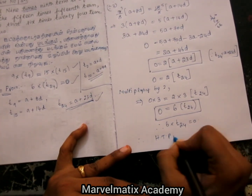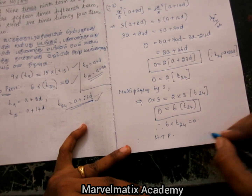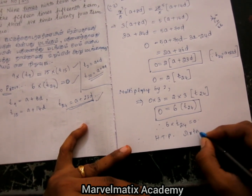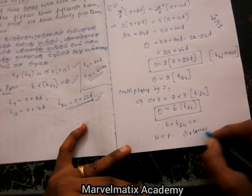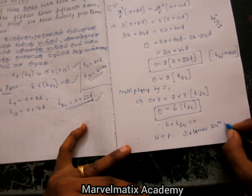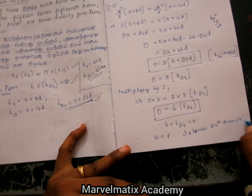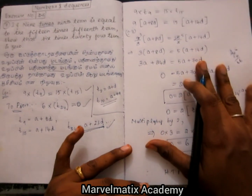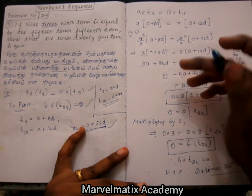6 times T24 equal to 0. Therefore, hence the proof: 6 times the 24th term is 0. This is the proof — 6 times T24 equals 0.